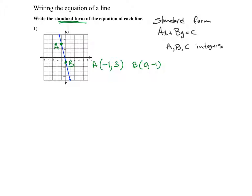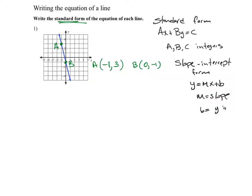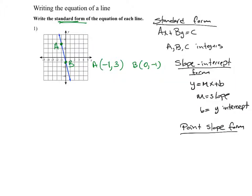To write the standard form, it's easier to start with the other forms depending on the information I have. I have the slope-intercept form, which is y equals mx plus b, where m is the slope and b is the y-intercept. The other form is called the point-slope form.